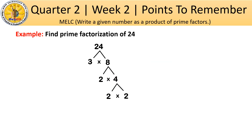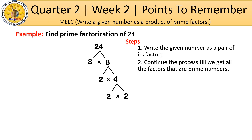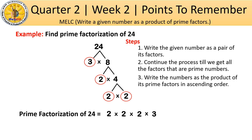So the steps we follow to get the prime factorization of 24 are: Step 1, we write the given number as a pair of its factors. Step 2, we continue the process till we get all the factors that are prime numbers. And lastly, we write the numbers as the product of its prime factors in ascending order. We are done at this point and we don't keep building the factor tree once we already have the prime factors. We build the factor tree going down every branch until we get down to a number that we can find no new factors for other than 1 and the number itself.